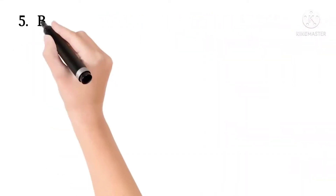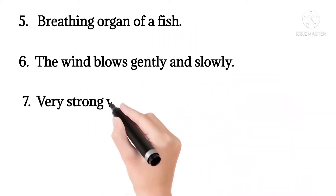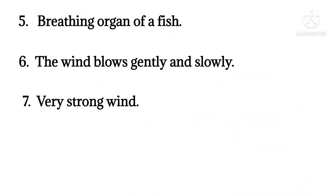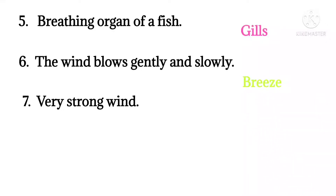The breathing organ of a fish is called gills. Fishes breathe through their gills using the oxygen dissolved in water. Fish is an aquatic animal. Crabs also breathe through their gills. When the wind blows gently and slowly, it is called a breeze.